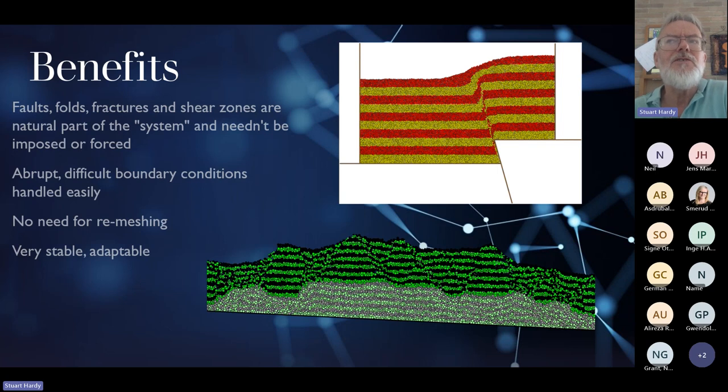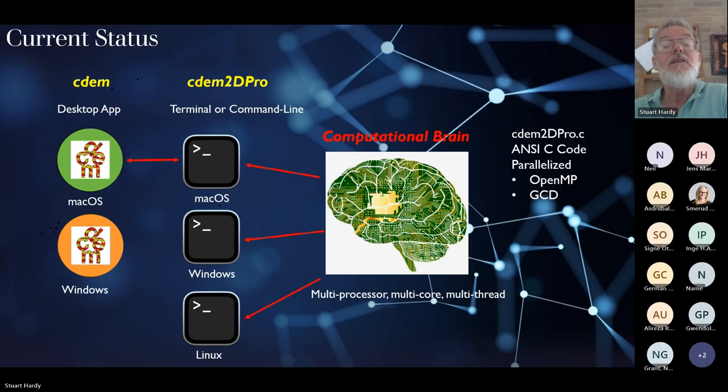Abrupt, very difficult boundary conditions are very easily handled. There's no problem with meshing across this fault here. The lower example here was a simulation where the end wall's removed and it was allowed to flow because we had a frictionless lower material and a cohesive upper material. There's no problem with that, which results in the technique being very stable and adaptable.